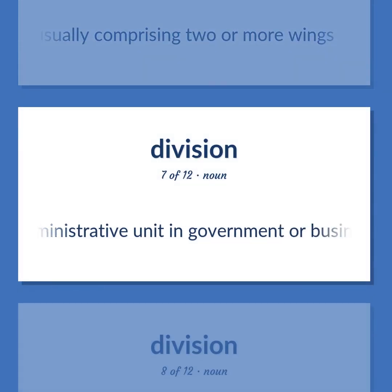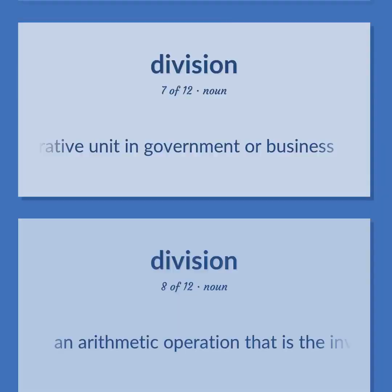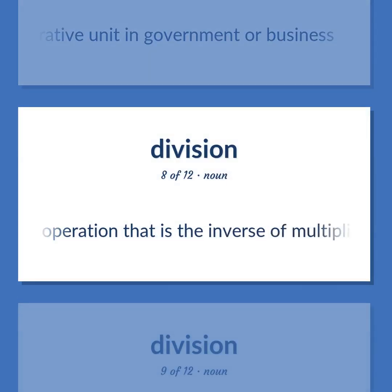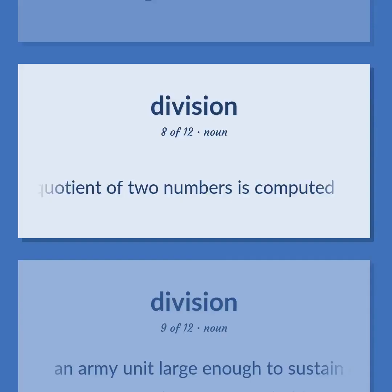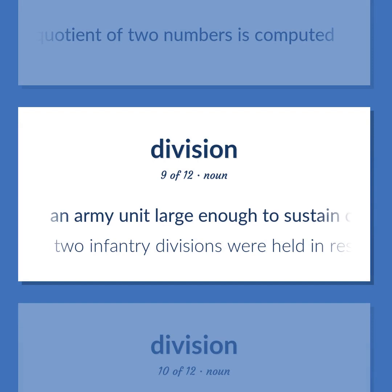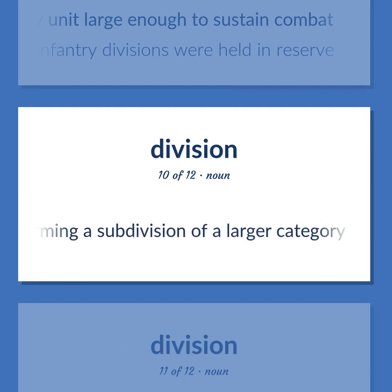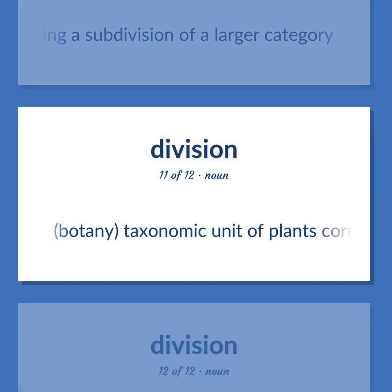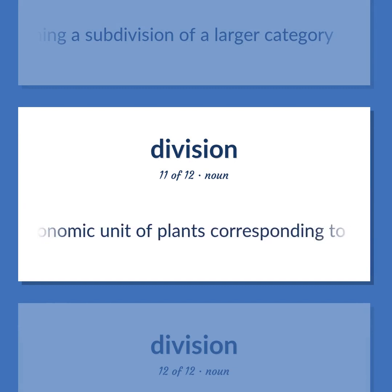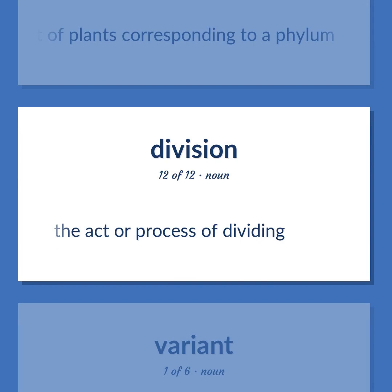An administrative unit in government or business. An arithmetic operation that is the inverse of multiplication; the quotient of two numbers is computed. An army unit large enough to sustain combat — two infantry divisions were held in reserve. Biology: a group of organisms forming a subdivision of a larger category. Botany: taxonomic unit of plants corresponding to a phylum. The act or process of dividing.